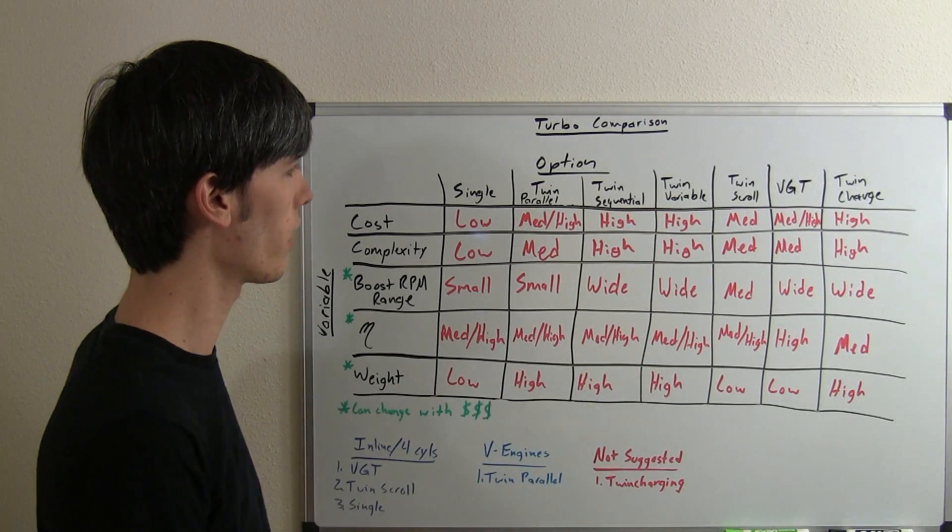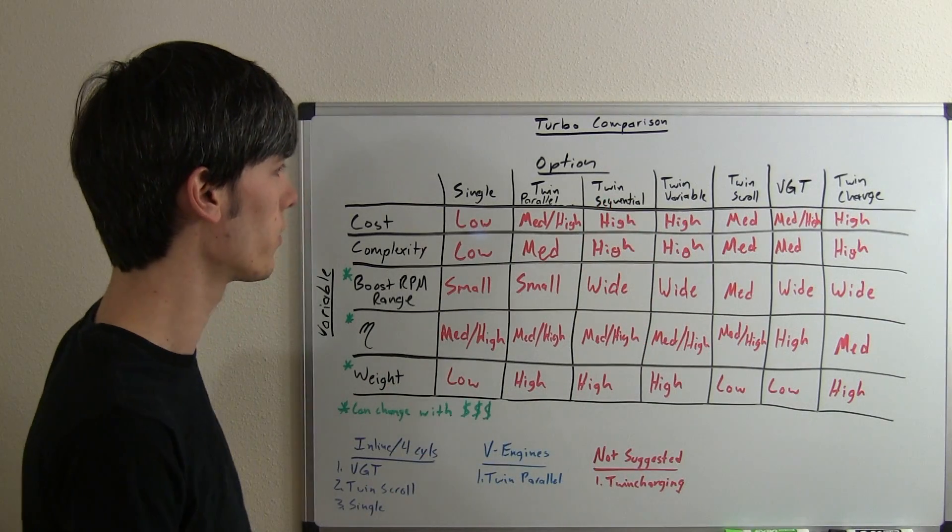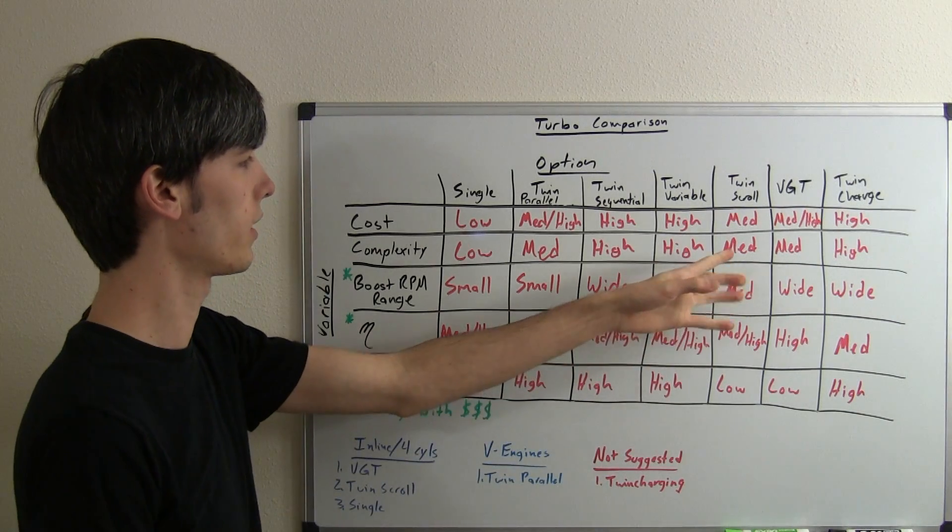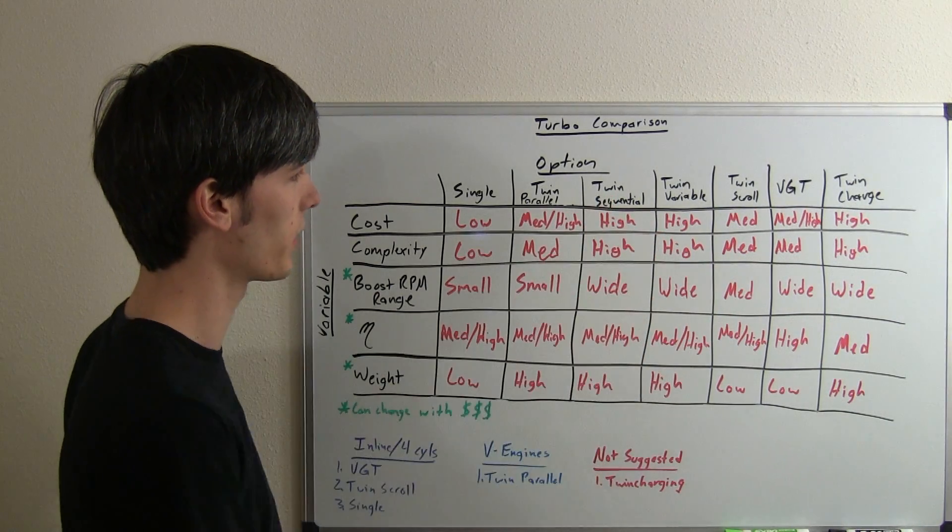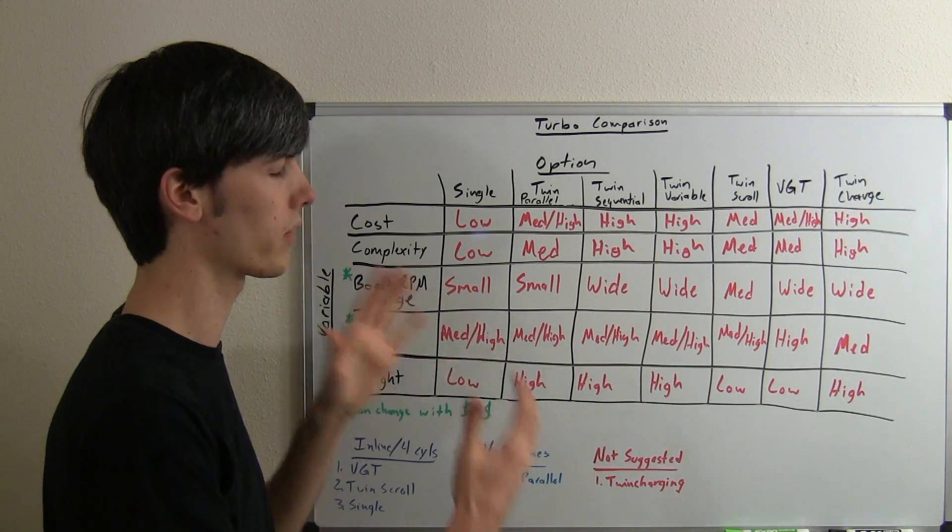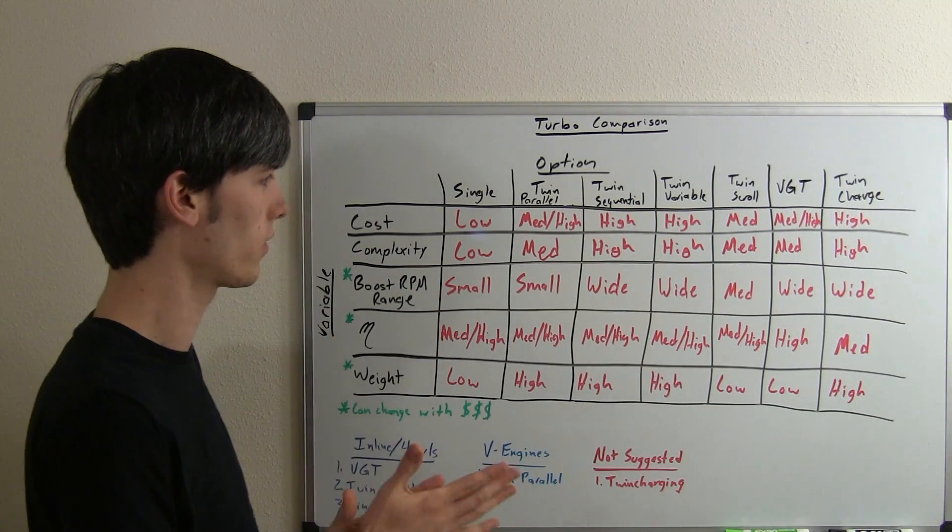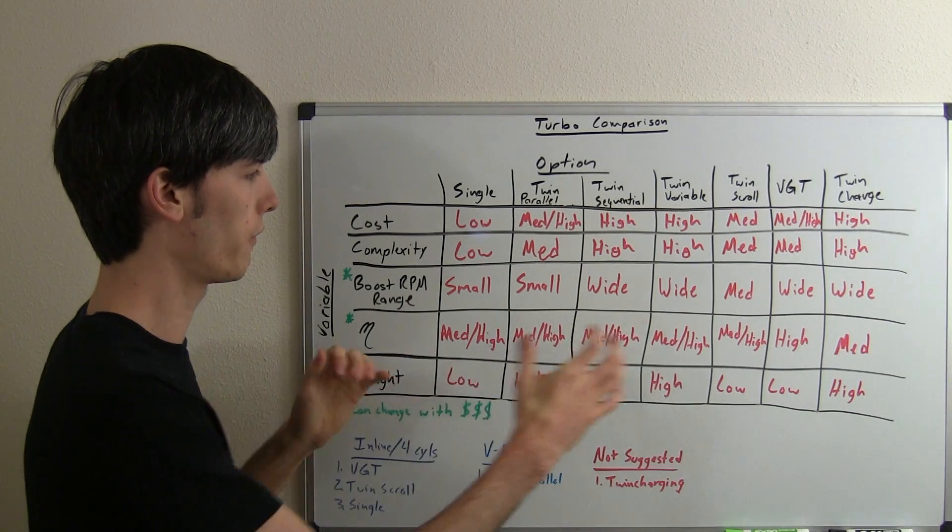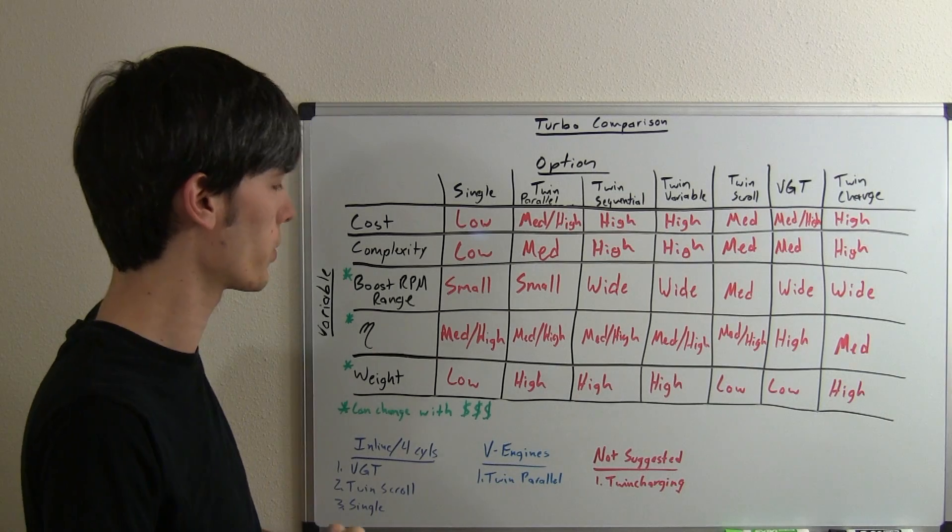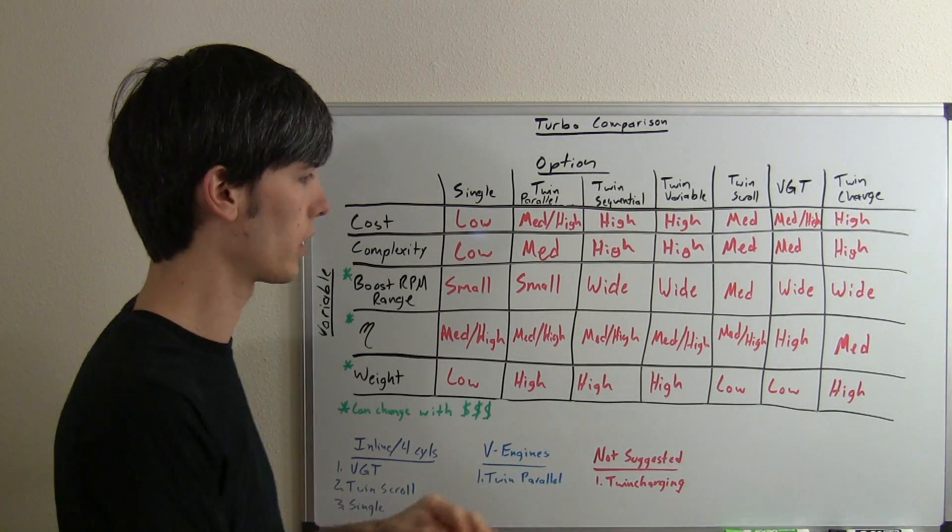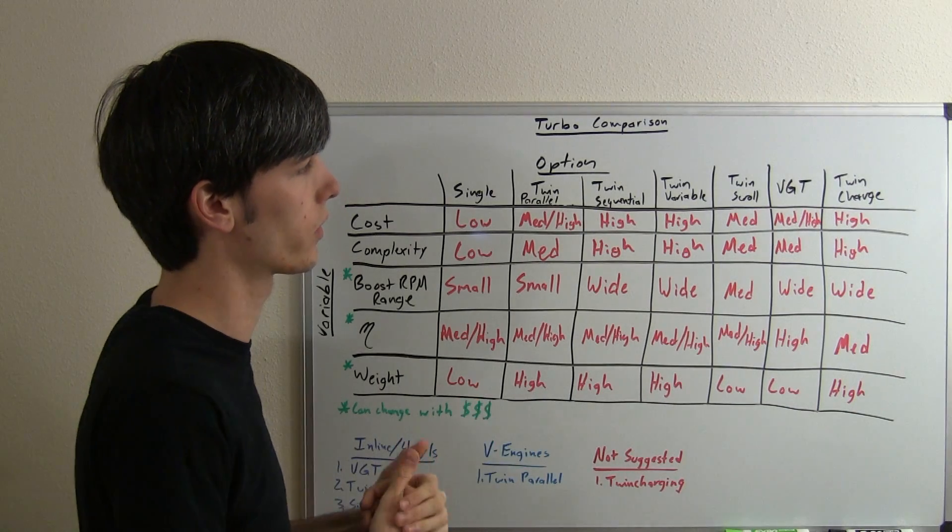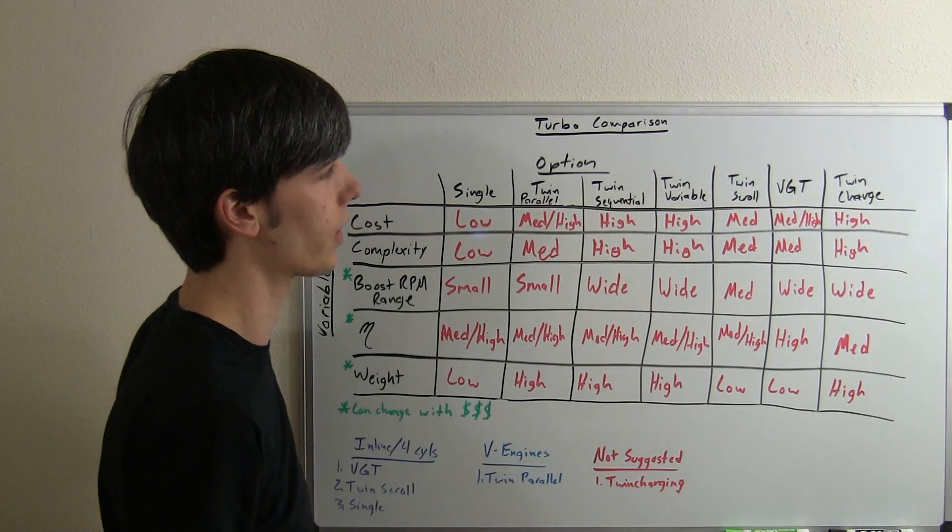Twin scroll: cost is going to go down a little bit compared to these twin options because this is just a single turbocharger. Complexity, a little bit less—you don't have the valves that some of these have. Boost RPM range, a little bit better than the single, but it's not really wide like some of these twin systems. Efficiency, kind of on par with these, though it will be a little bit better than a single turbocharger. And then the weight will be fairly low because it's kind of almost like a single in that sense, so it's going to be relatively light compared to these options here.